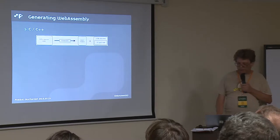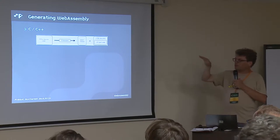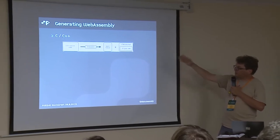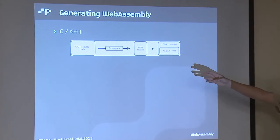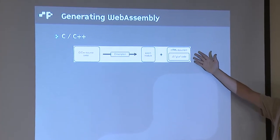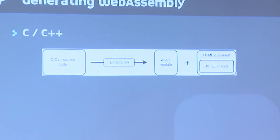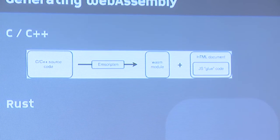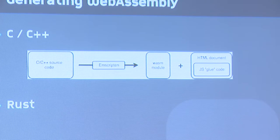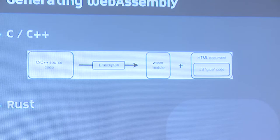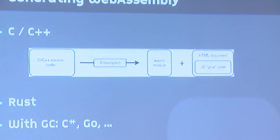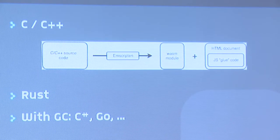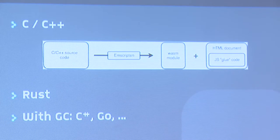How do you generate WebAssembly? A common approach is to write in C or C++ and use the Emscripten compiler, which compiles the C code to WebAssembly. Then you include that in an HTML document and write some JavaScript to call it. There are other languages which support compiling to WebAssembly — a very good one is Rust, which has manual memory management, an advantage since WebAssembly has no garbage collection. Garbage-collected languages need a runtime, but those runtimes exist, so we also have WebAssembly compilation for C# and Go and other languages, though they carry a little overhead.